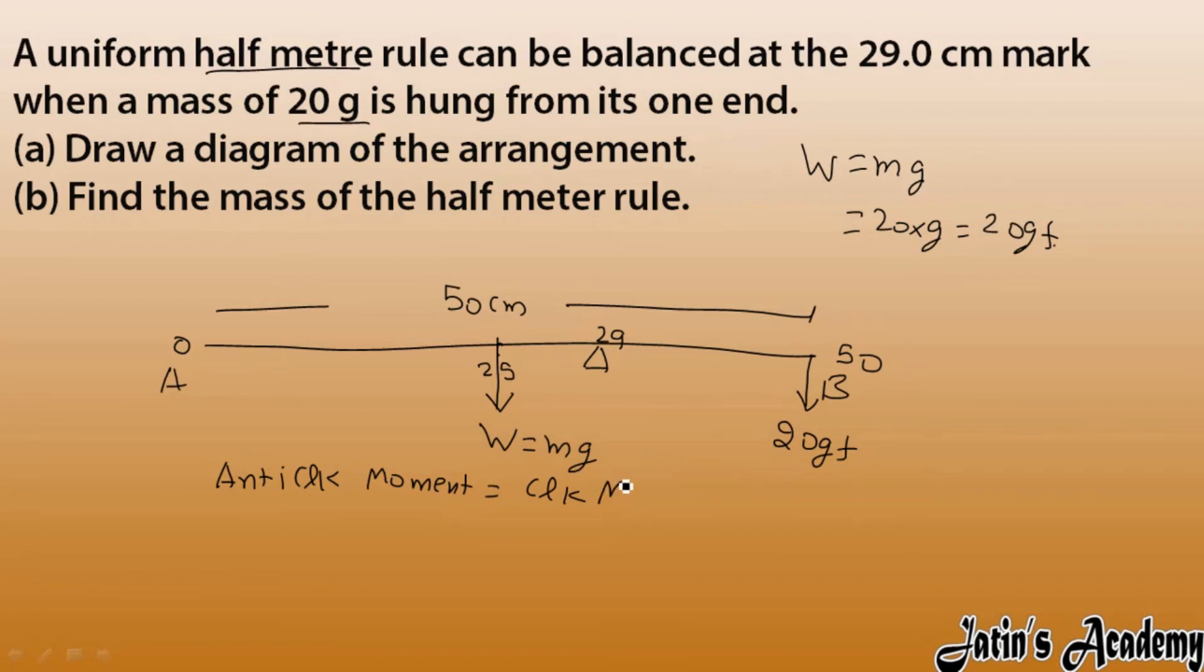Anticlockwise moment: W is creating that, which is W into how much? This is a 25 mark, this is 29, so 25 minus 29, how much is this distance? Yes, 4. And clockwise moment, this is 20, and perpendicular distance in this case is 50 minus 29.